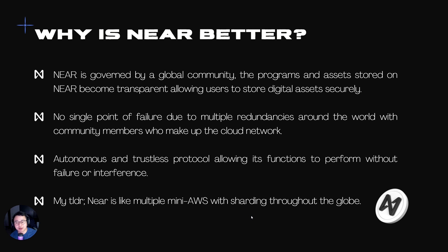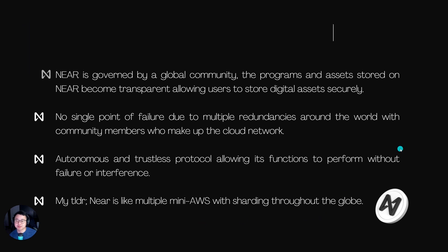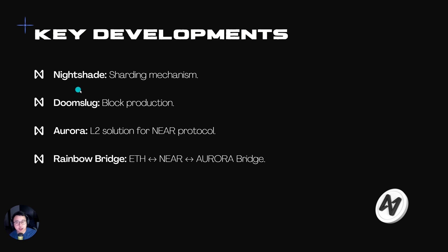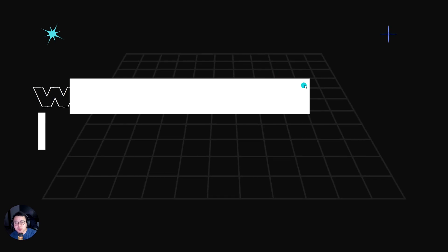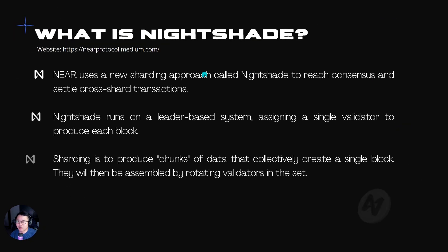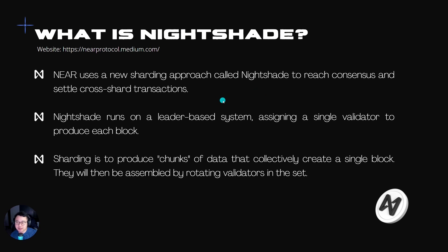Let's go into a bit more detail on how this is actually done. The main way they're doing this is through the Nightshade mechanism, which is how they do their sharding. Key developments include Nightshade, Doomslug, Aurora, and the Rainbow Bridge. Nightshade specifically is their way of sharding, how they reach consensus, and it runs on a leader-based system. This is similar to Solana, so you can imagine NEAR protocol having similar speeds to Solana.